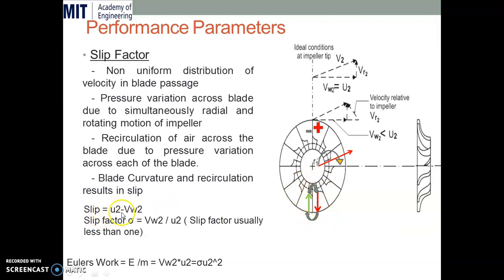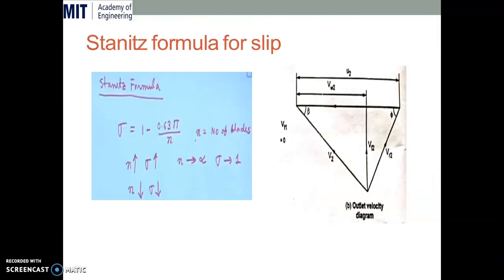Slip is defined as U2 minus Vw2. The slip factor sigma is defined as Vw2 divided by U2, and it is usually less than 1. The work done by the impeller on the centrifugal compressor is called the Euler work, given as E/M (work done per kg mass), which equals Vw2 times U2. Substituting the slip factor sigma, Euler work equals sigma times U2 squared. So there is an increase in work input due to slip.